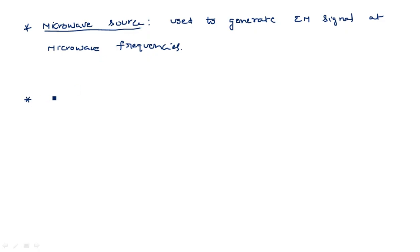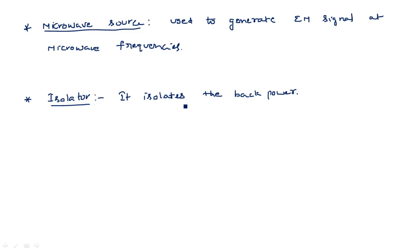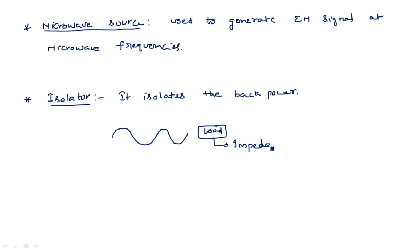The isolator is a device used to isolate something — specifically, it isolates back power. Suppose the output of the bench setup is connected to an impedance-mismatched device. That impedance mismatch causes a standing wave. The signal being transmitted encounters a load with impedance mismatch, causing the signal to reflect back and superimpose with the transmitted signal.